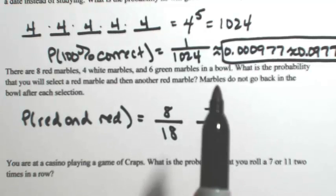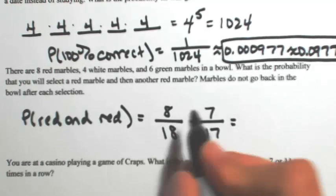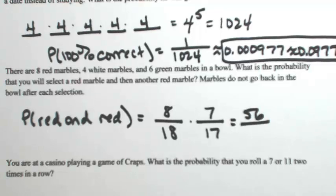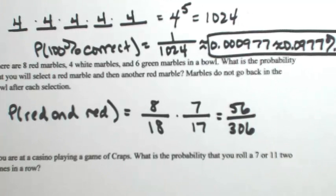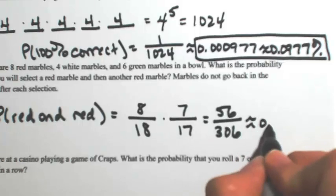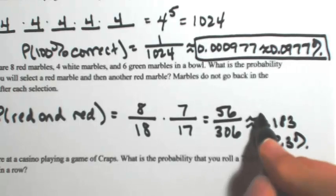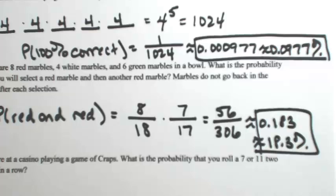Because we have a sequence occurring — a red followed by another red — we're going to multiply those together. Multiplying across the top we get 56, and 18 times 17 gives us 306. So 56 divided by 306 is about 0.183. We're looking at about an 18.3% chance that you'll get a red one followed by another red one.